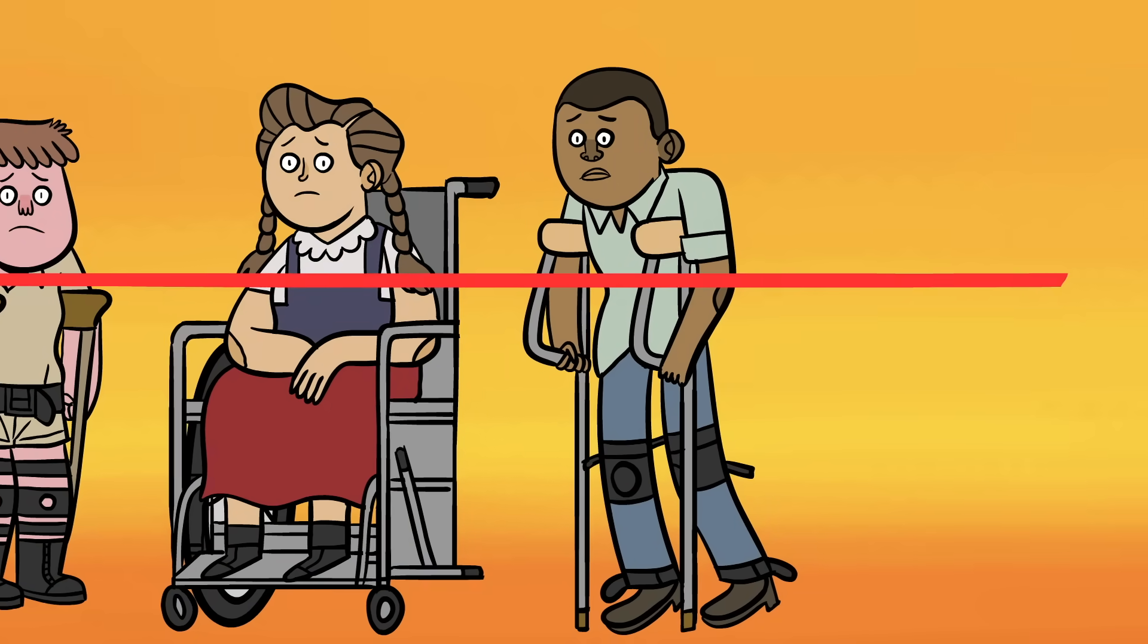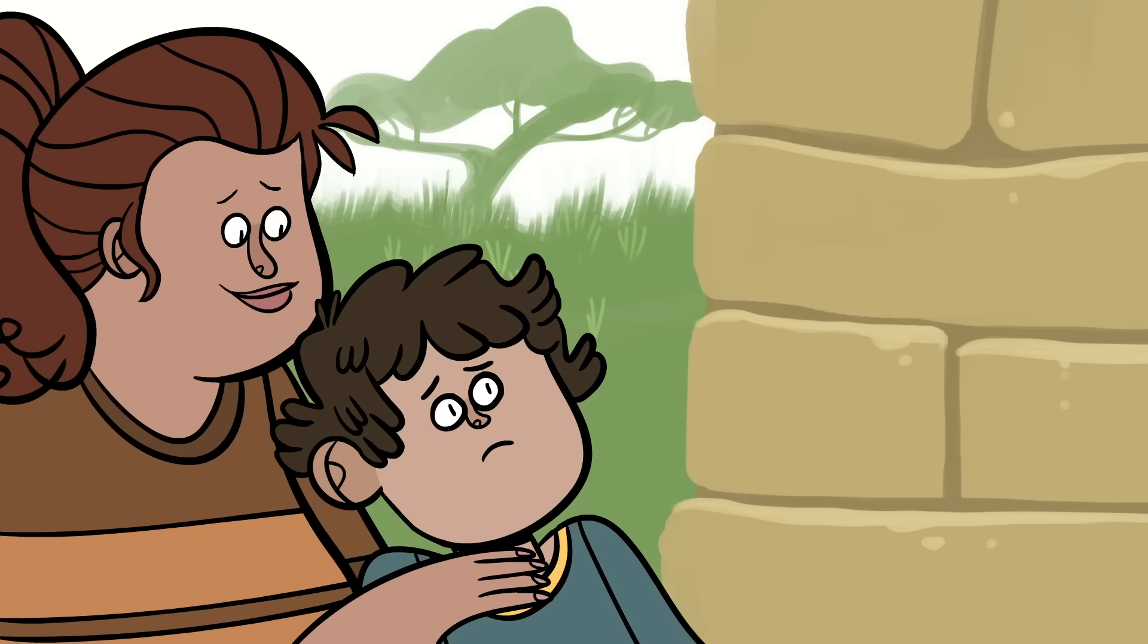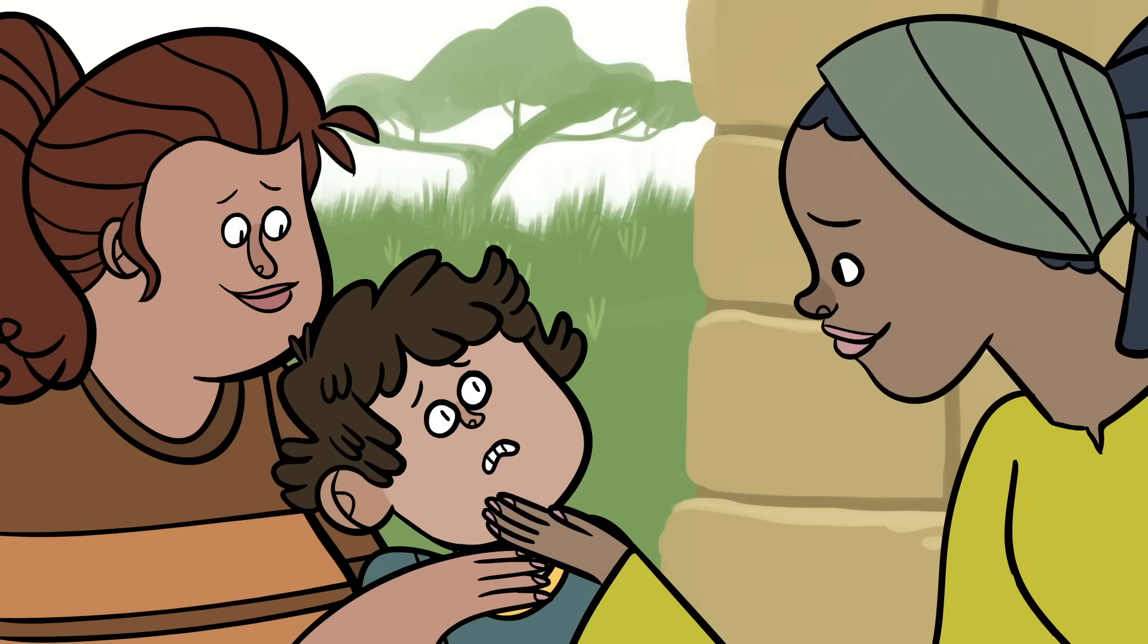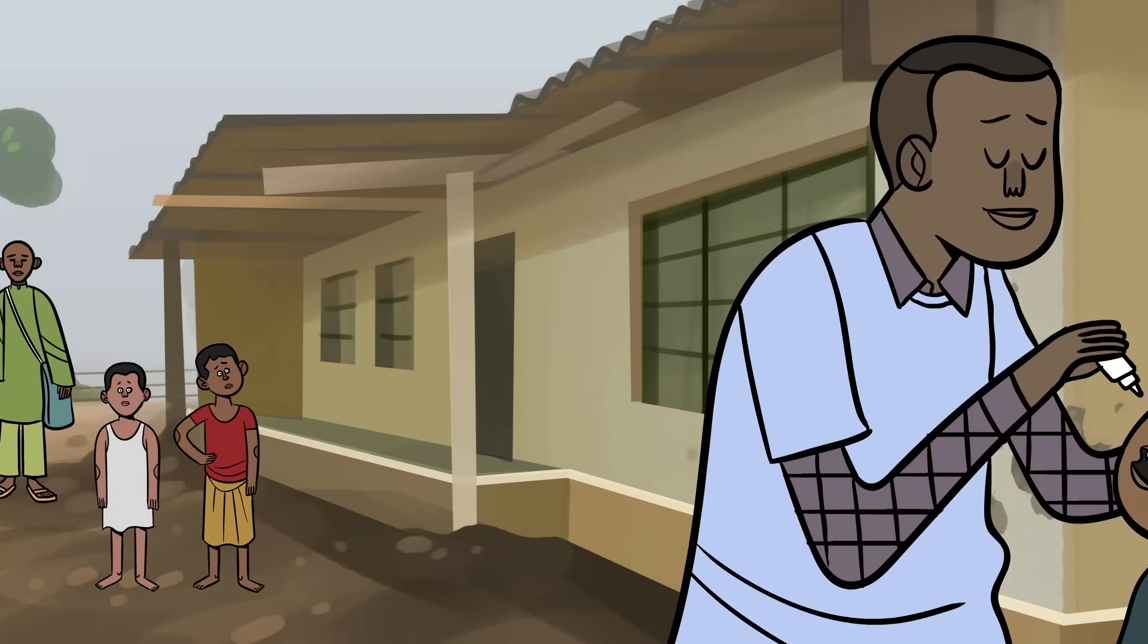Yet just 10 years later, paralytic polio cases in the U.S. dropped by 96%. Soon, similar trends spread worldwide, and it looked like we were on track to eradicate polio for good.